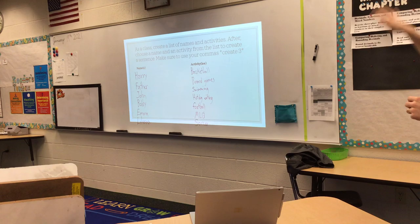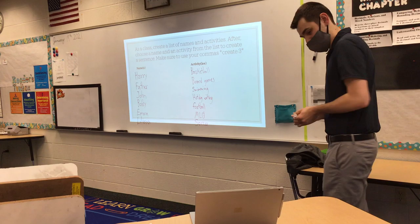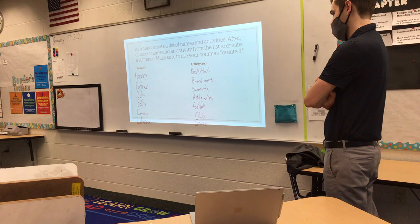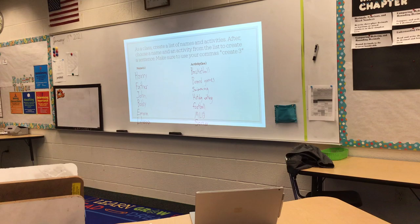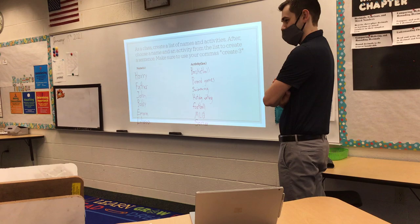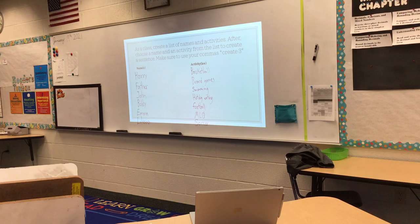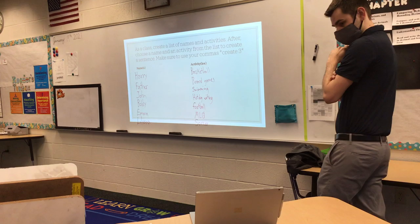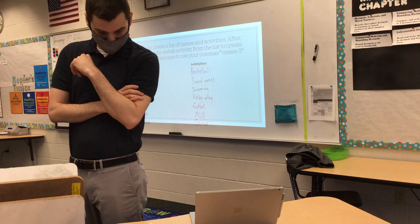That's plenty of activities. Take three names and three activities, create sentences with those in mind — go ahead and do that now. MLG stands for Major League Gamer — not sure how that's an activity, it's more of a title. Someone suggests 'wizard range' since Harry is on the list, leading to 'You're a wizard, Harry!' from the class.